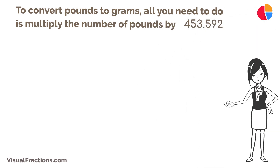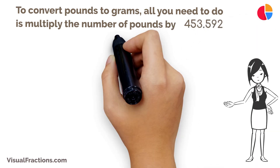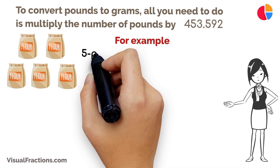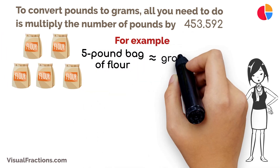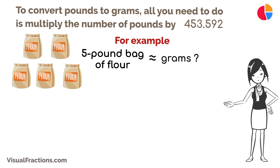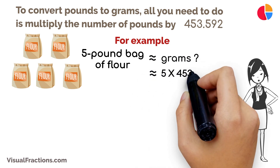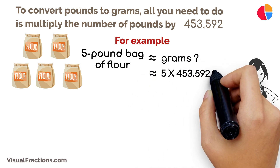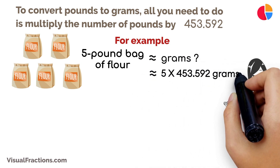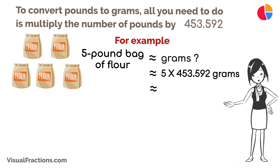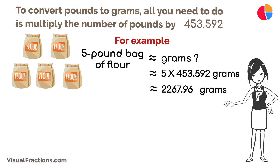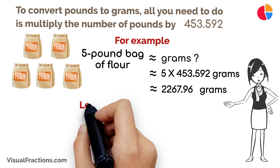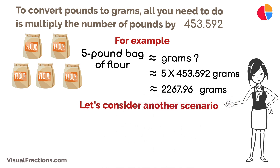To convert pounds to grams, all you need to do is multiply the number of pounds by 453.592. For example, if you have a five-pound bag of flour and you want to know the weight in grams, simply multiply five pounds by 453.592.